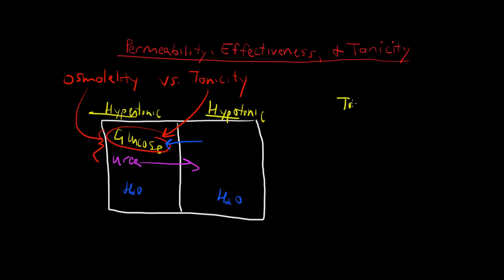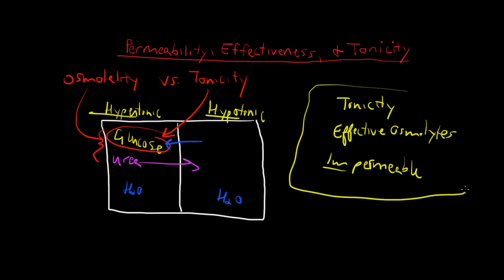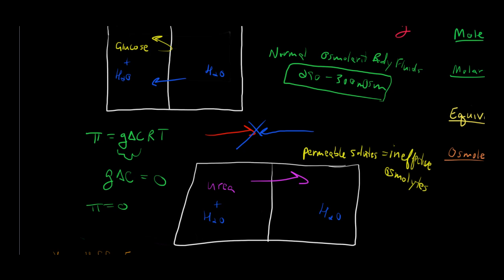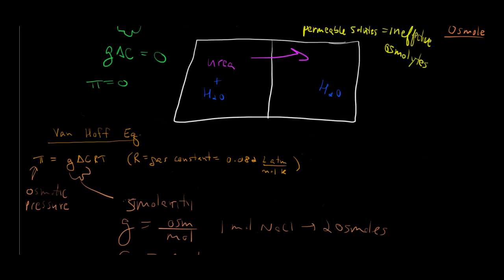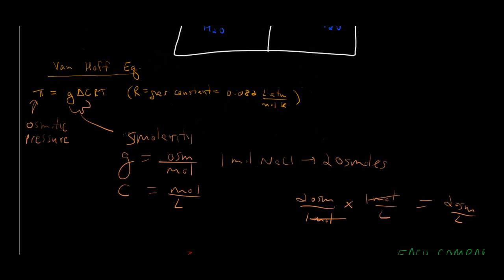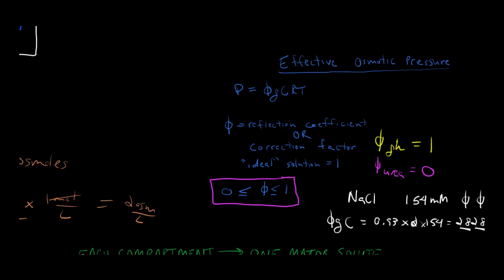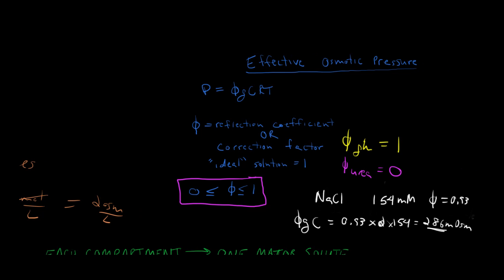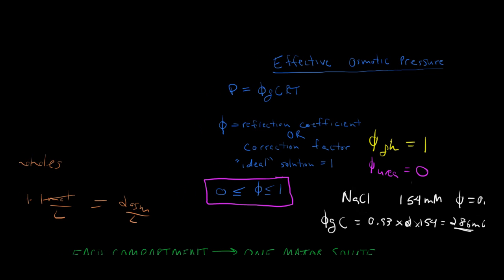So in other words, tonicity, effective osmolytes, and impermeable solutes all go together. So we've covered how osmotic pressure gradient will influence the flow of fluid. And we've quantified it with Van Hoff's equation, which is a more ideal equation. And we've moved to a more advanced equation as the effective osmolyte pressure with its reflection coefficient, which is the fraction of solutes reflecting off the membrane.